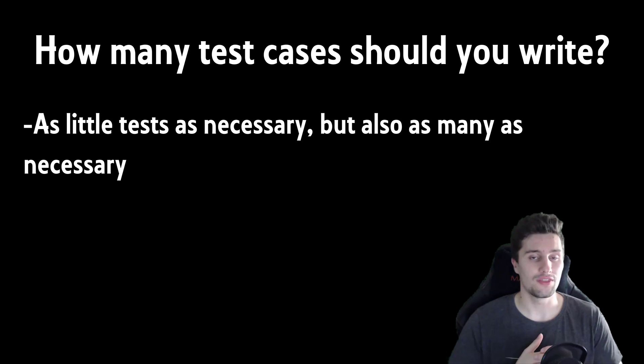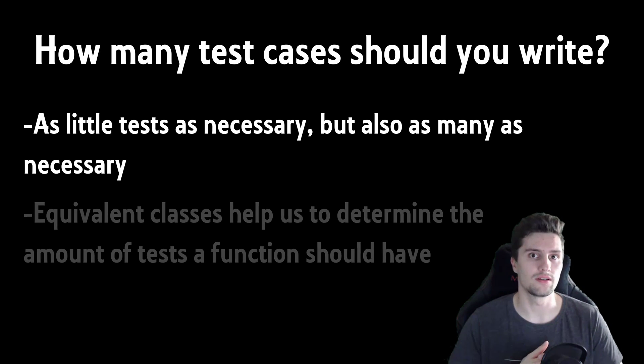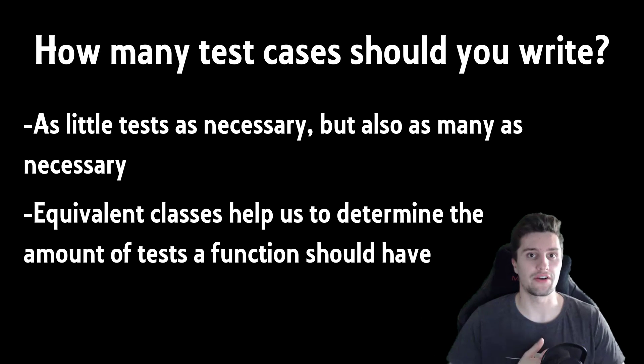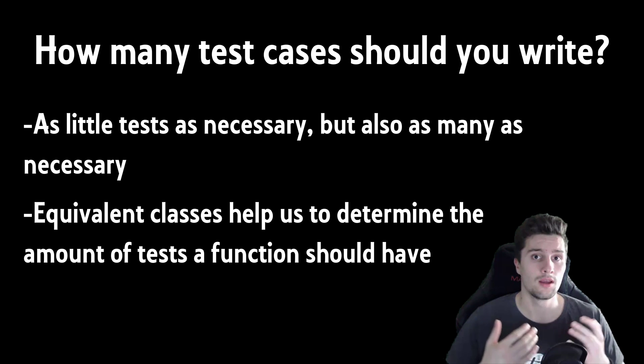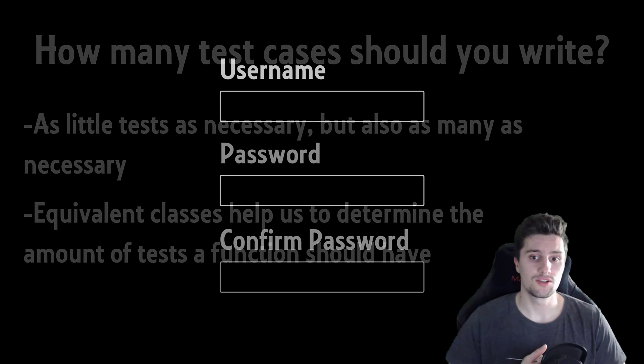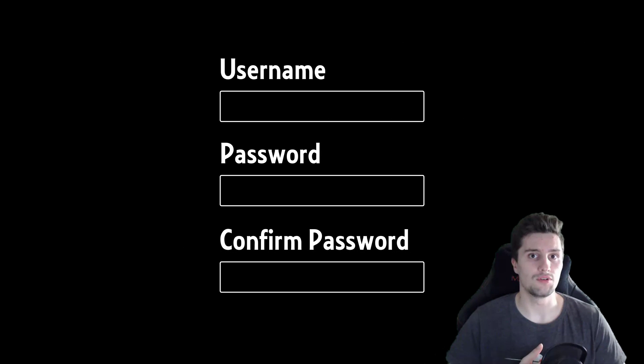For that we have the so-called equivalent classes in software development. It's kind of hard to explain generally, but let's actually consider an example so that the concept of equivalent classes gets more clear to you. Let's take a look at this registration form here. We want to validate the user input of this registration form. We want to know how many test cases should we write for that. In the end, we want that our test cases together cover the code of our validation function.